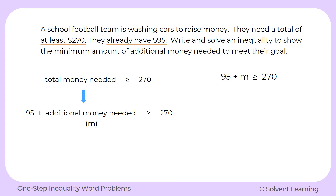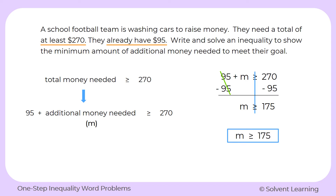Now let's solve this inequality. On the left side, we subtract 95 to get m by itself, and we do the same on the right side. 95 minus 95 cancels out, leaving just m. On the right side, 270 minus 95 leaves us with 175. We bring down our inequality sign — since we only subtracted 95, the inequality does not change. So m is greater than or equal to $175, meaning the additional money they need has to be at least $175, or the team needs a minimum of $175 of additional money.